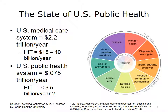The classic domains of traditional public health services work together in rotation, with research at their core. It is worth reviewing the assessment, policy, and assurance domains and their subdomains. The subdomains of assessment include monitor health and diagnose and investigate services. Policy development includes the services to inform, educate, and empower, mobilize community partnerships, and develop policies. Assurance services include enforced laws linked to provide care, assure competent workforce, and evaluation.